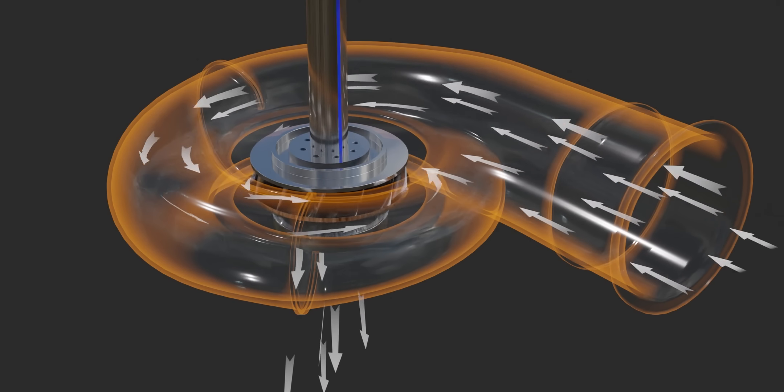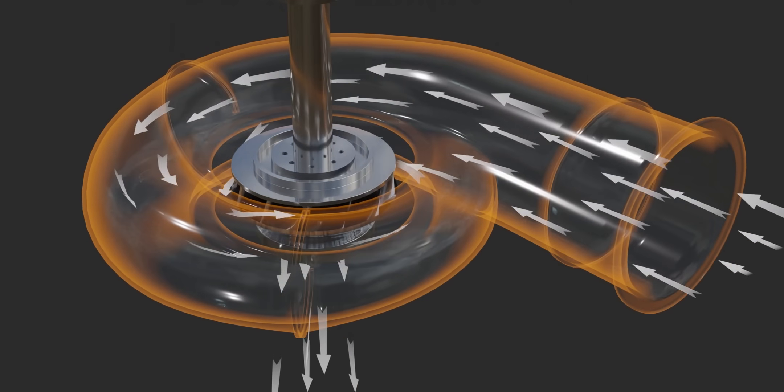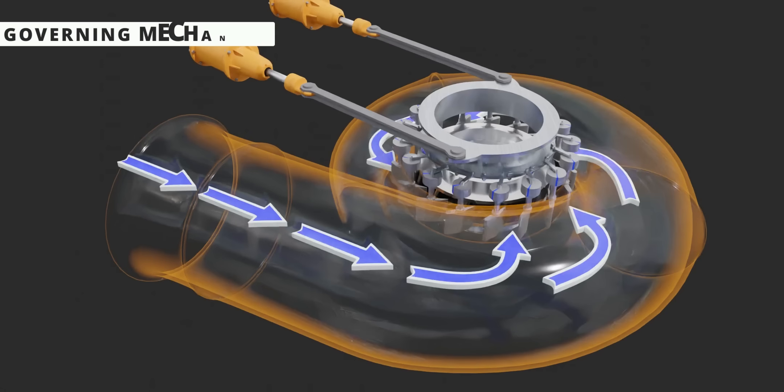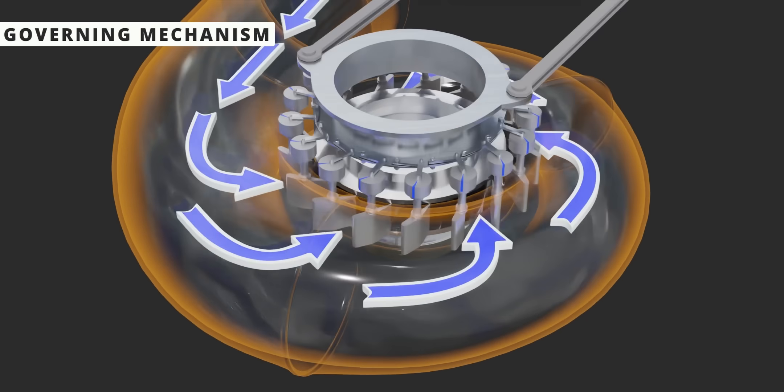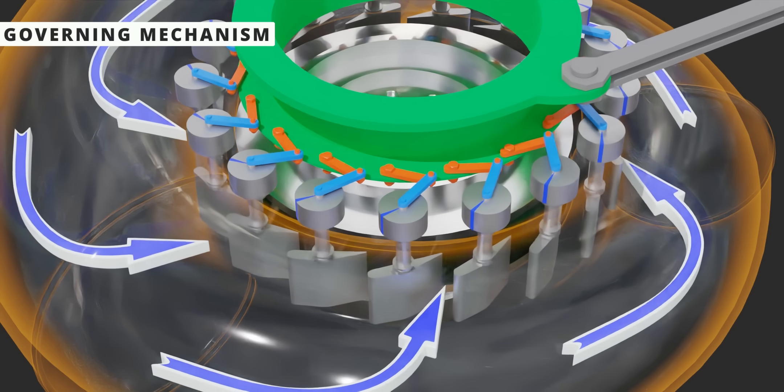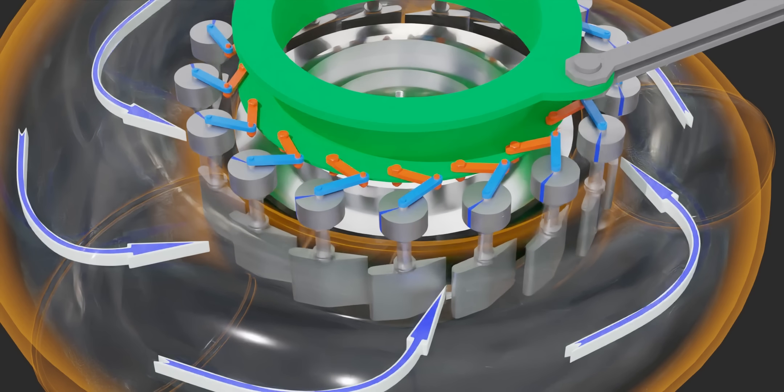At the outlet of the turbine, water loses both the kinetic energy and the pressure energy. This beautiful mechanism is the governing mechanism of Hoover Dam's turbine. Can you predict what will happen if you turn this ring? Yes, you are right.